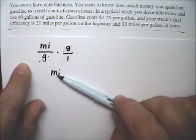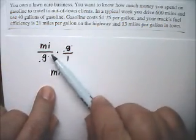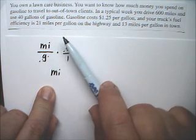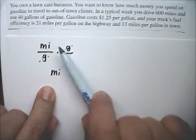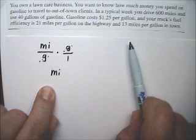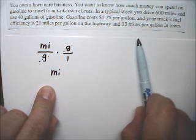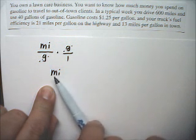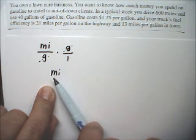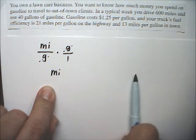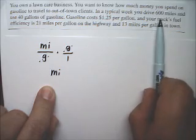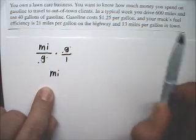So, what the book does is they do this for the highway, and they also do this again for the city, and together the miles on the highway plus the miles in the city add up to 600.